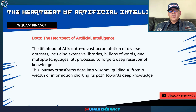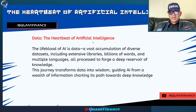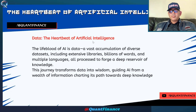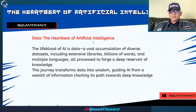The next dimension of artificial intelligence is data. Data is the heartbeat of artificial intelligence — it is the lifeblood of AI. It is the vast accumulation of diverse datasets, huge amounts of literature, extensive libraries, billions of words, and multiple languages. All of these have been used to train systems now called machine learning systems.